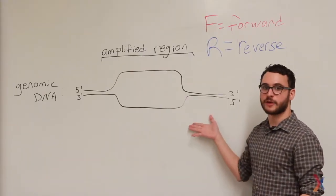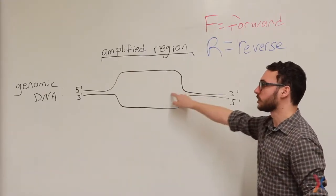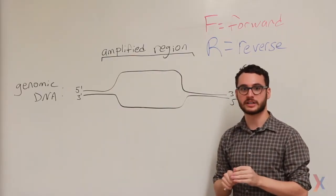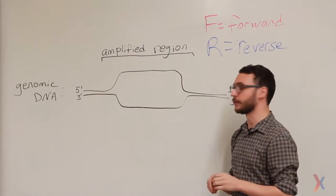So here I have a fragment of the human genome and in the center is the region that I want to amplify. In order to amplify this region, I'll need to design both a forward primer and a reverse primer.